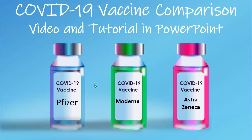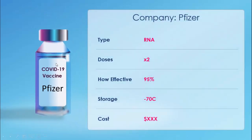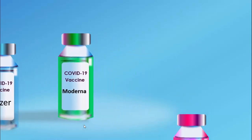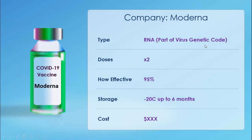When I click, two bottles go and the Pfizer vaccine remains. You can see the company Pfizer, type RNA, doses required, effectivity is 95%, storage is minus 70 degrees, and you can put the cost of this vaccine. When I click again, three bottles come back and then it talks about Moderna — type is RNA, part of virus genetic code, effectivity is also 95%, storage temperature is minus 20 degrees.